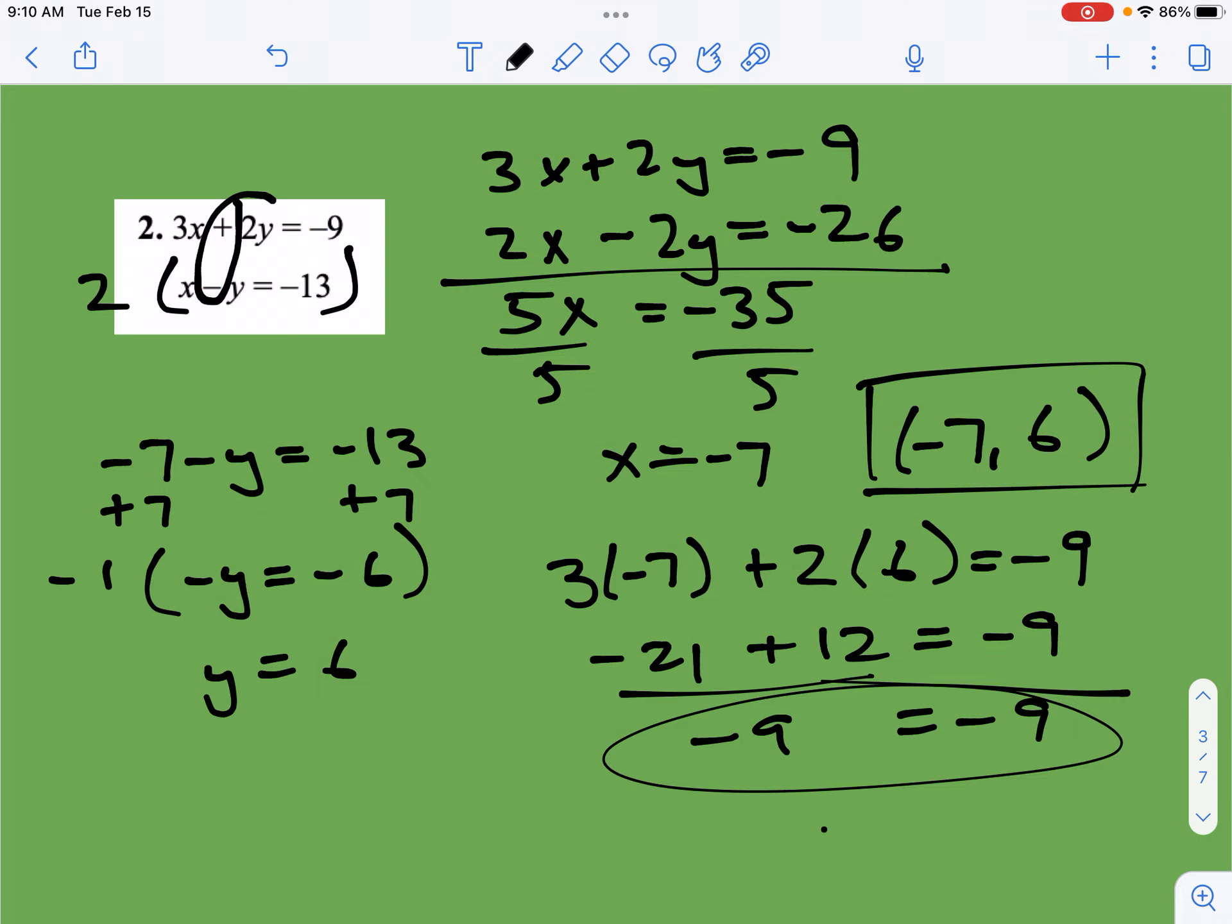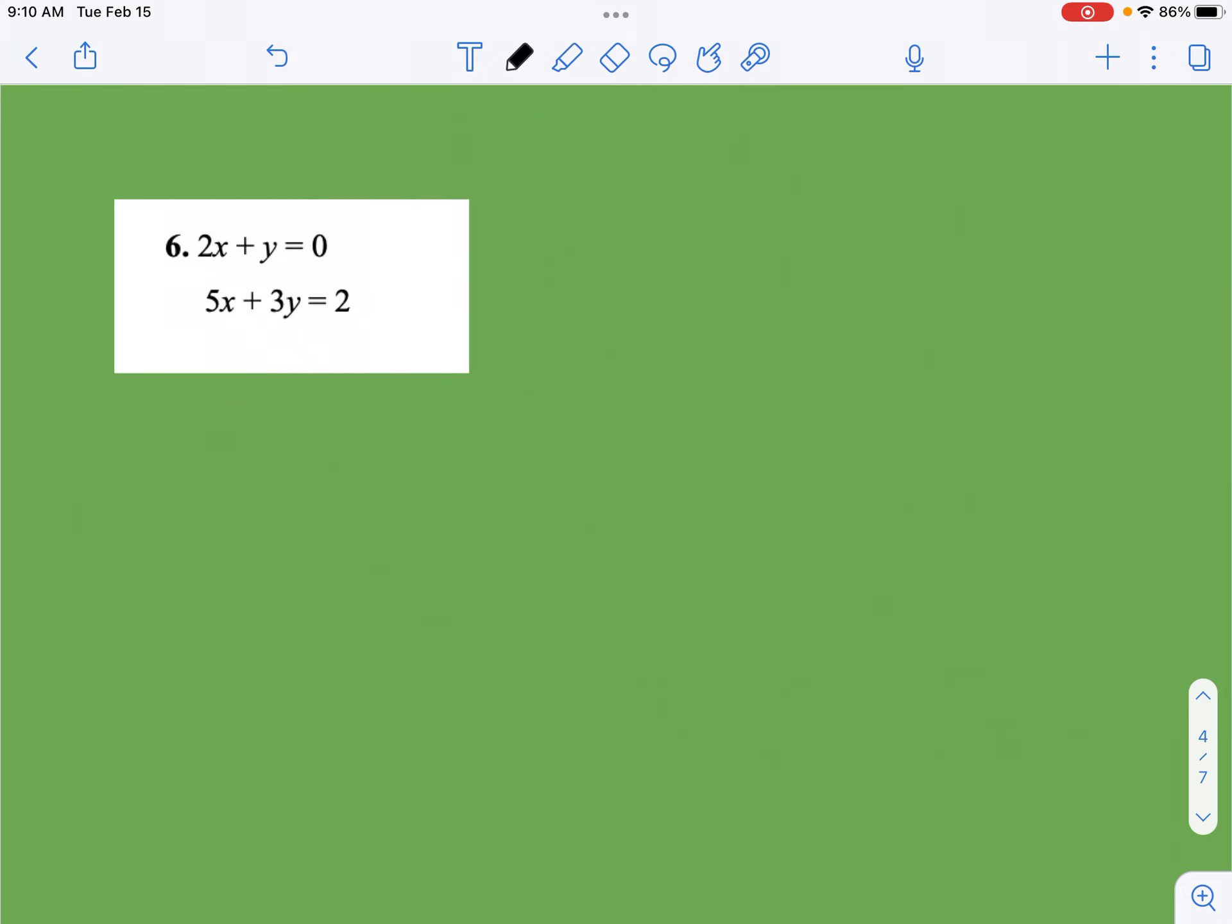Okay. So on this one, if I look at this, it looks like 2 and 5, again, don't really work well together. But 1 and 3 do. So I'm going to multiply this top equation by negative 3. So that's going to give me negative 6x minus 3y equals 0. 0 times anything is 0. Then you have 5x plus 3y equals 2.